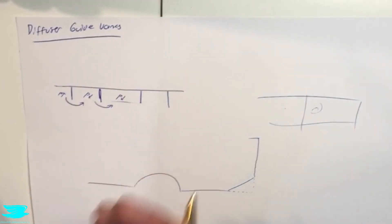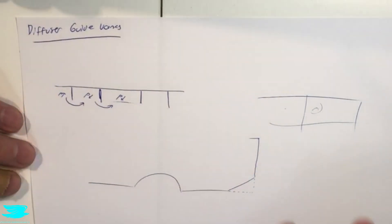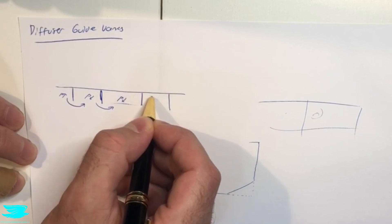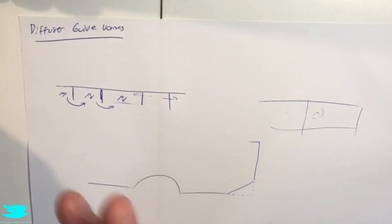In addition to that, the vanes can also segregate different pockets. So let's say this diffuser for some reason is stalling in certain regions. It prevents the stalled region from bleeding over into the regions that are still working well, and that then segregates that bad flow and makes the diffuser still work pretty well.